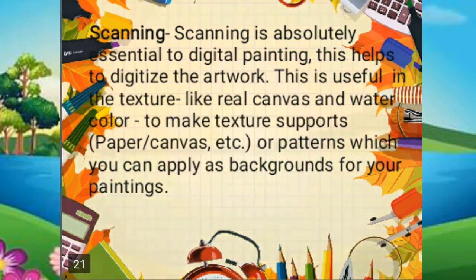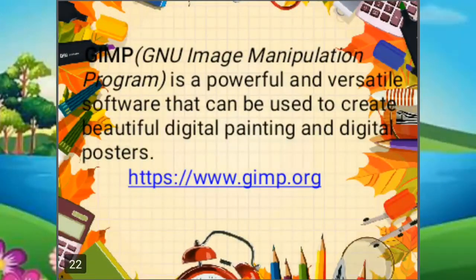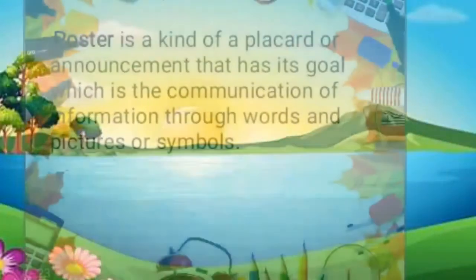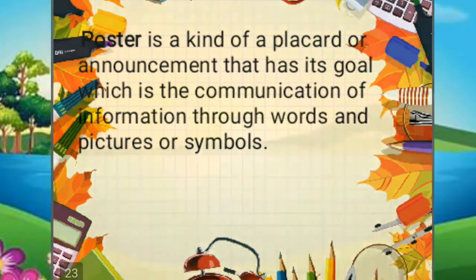Number five is GIMP, or GNU Image Manipulation Program — this is a powerful and versatile software that can be used to create beautiful digital paintings and digital posters. And number six is poster — a poster is a kind of placard or announcement that has its goal, which is the communication of information through words and pictures or symbols.